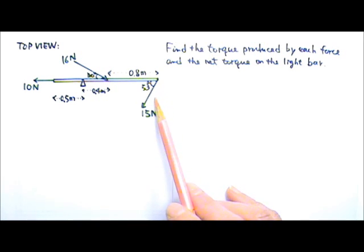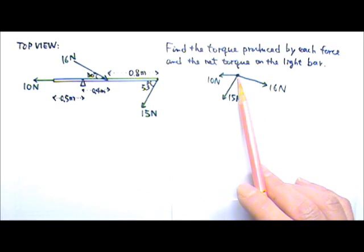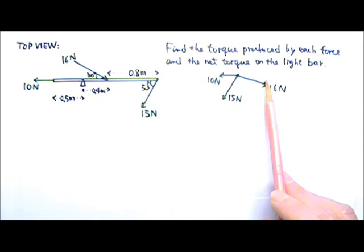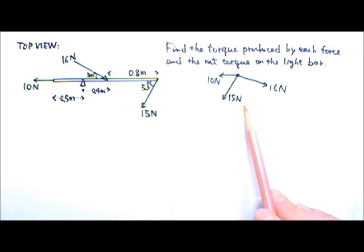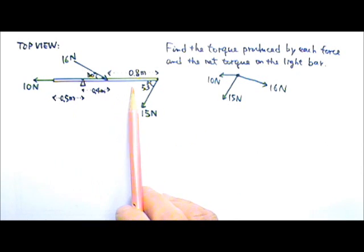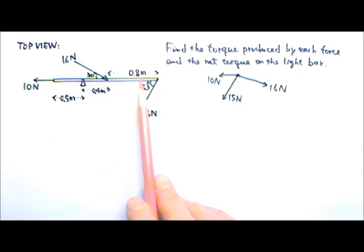When we draw force diagrams, we used to draw a dot to represent the object. But if we do that here, I would have a dot for the bar and three forces coming out of the dot. This force diagram cannot tell us anything about torque because we cannot see any axis, distance, or lever arm. Therefore, when we deal with torque, we have to draw each force at the exact location where the force acts on the bar.